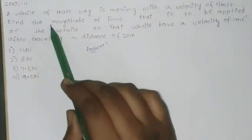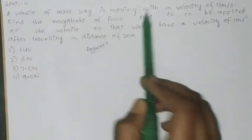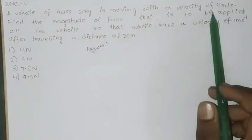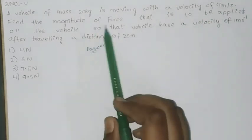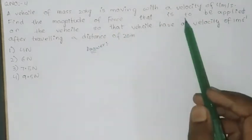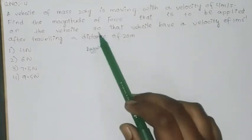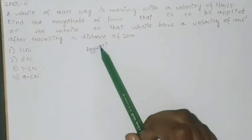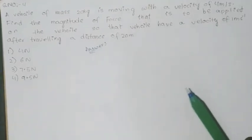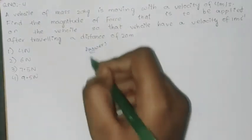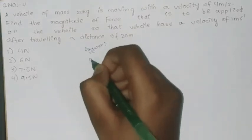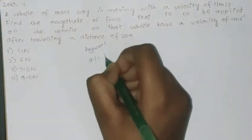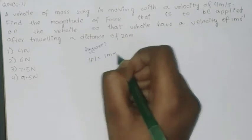Now, a vehicle of mass 20 kg is moving with a velocity of 4 m per second. Find the magnitude of force that is to be applied on the vehicle so that the vehicle has a velocity of 1 m per second after travelling a distance of 20 meters. Here first we will write |F| = |m × a|.